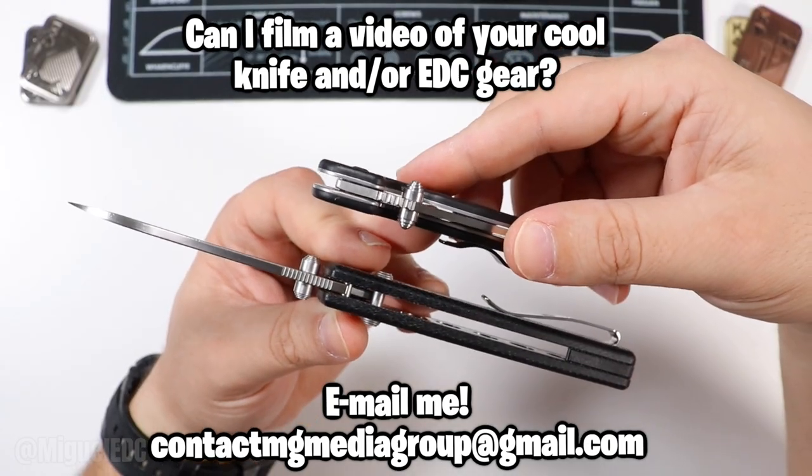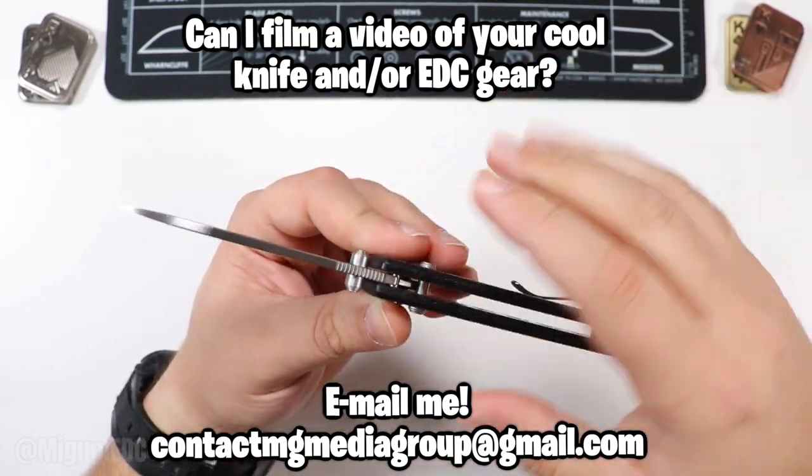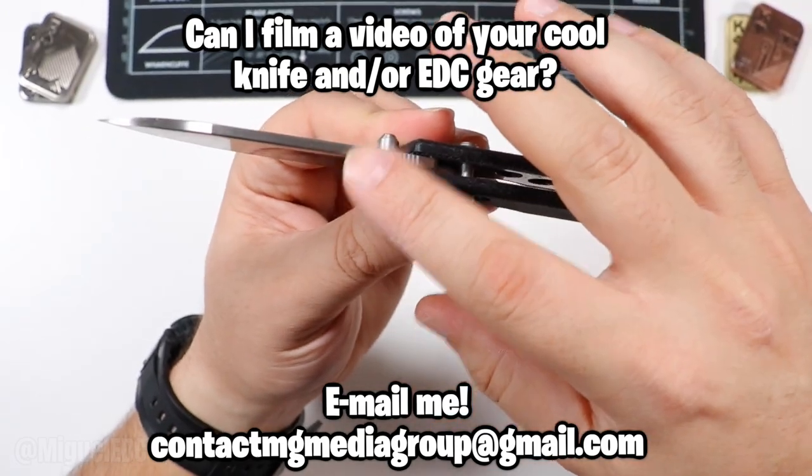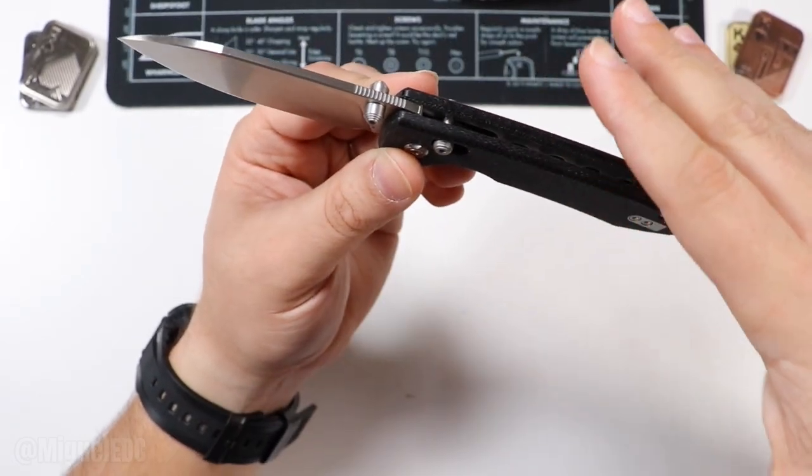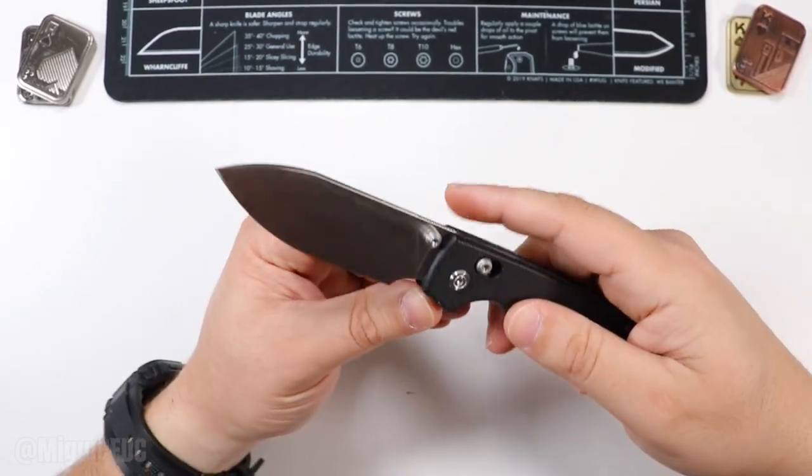This has been the standard in the industry forever. If you're going to do a thumb stud knife, check out the Ontario Wrap Model 1 or 2, the Demco knives. If you're going to do thumb stud, just do them on both sides. Don't do the whole reversible thumb stud nonsense by putting a thumb stud only on one side.